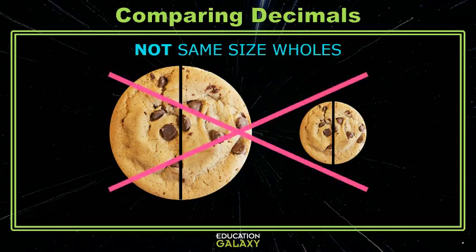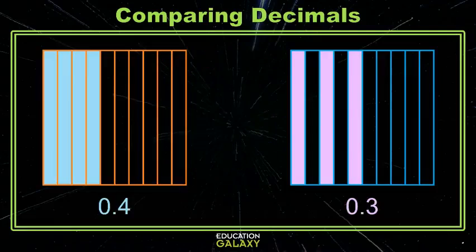Let's look at something we can compare. Here we have two equal size grids. They're both separated into ten equal size pieces. That means that each piece is a tenth of the whole. On the left, I have four pieces shaded, so that's the decimal four tenths. And on the right, I have three pieces shaded, and that's the decimal three tenths.